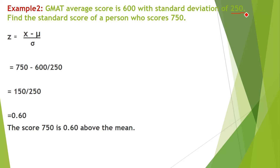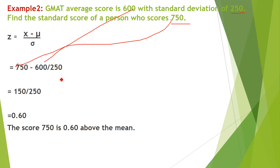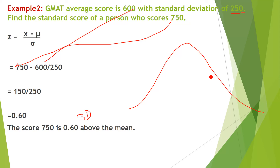Another example: the average GMAT score is 600 with a standard deviation of 250. Find the standard score for a person who scores 750. Z = (750 − 600) / 250 = 150 / 250 = 0.60. This means the score of 750 is only 0.60 standard deviations above the mean — not even one full standard deviation, so it did not stand out dramatically.